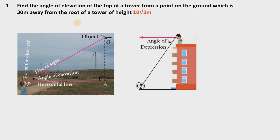Hi, hello, welcome. This is Rudresh. Trigonometry problem from exercise 6.1, first sum. Find the angle of elevation of the top of a tower from a point on the ground which is 30 meters away from the root of a tower of height 10 root 3 meters.